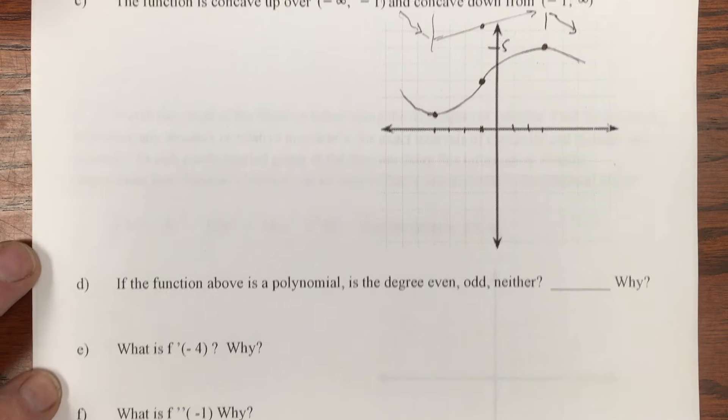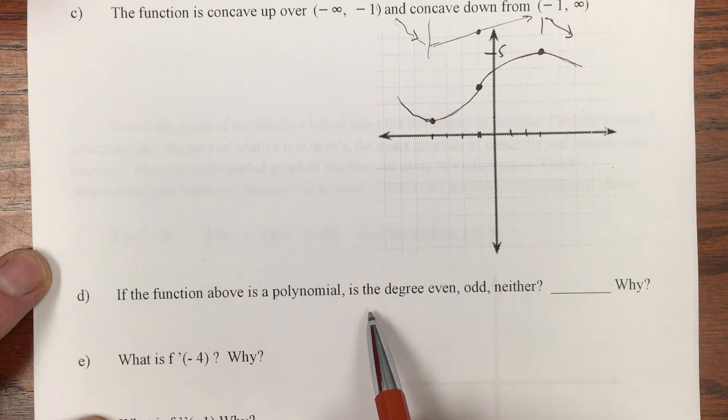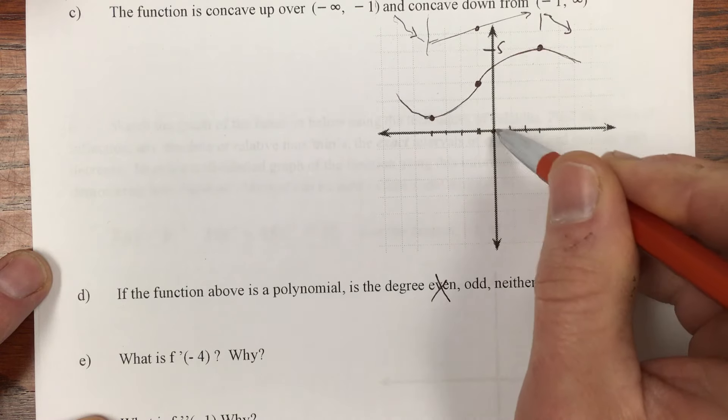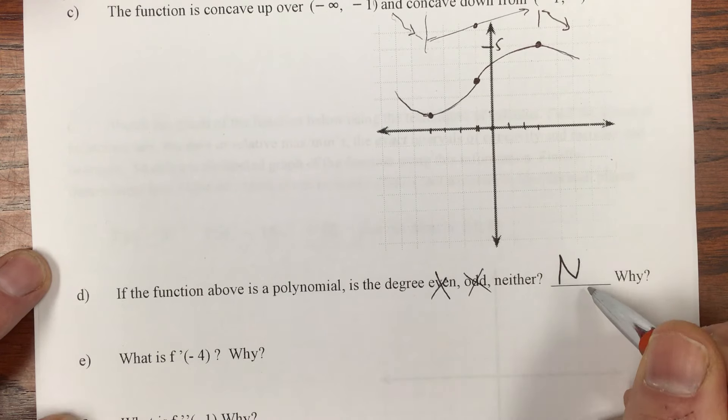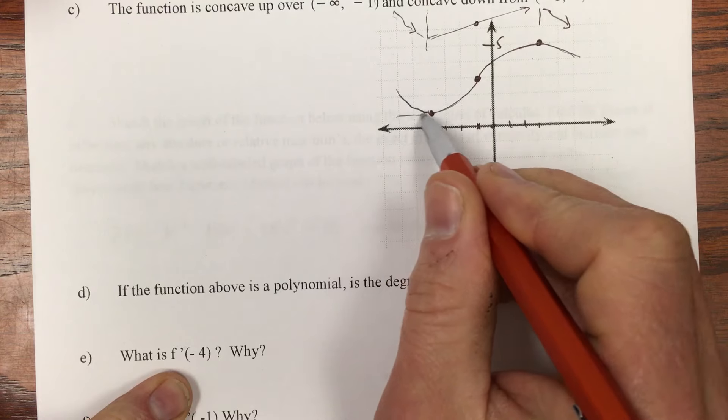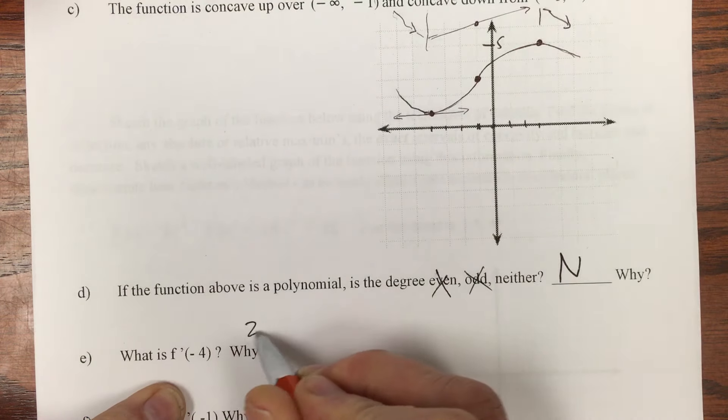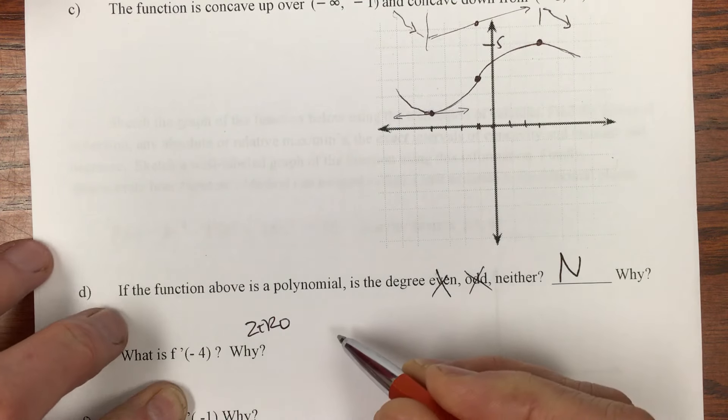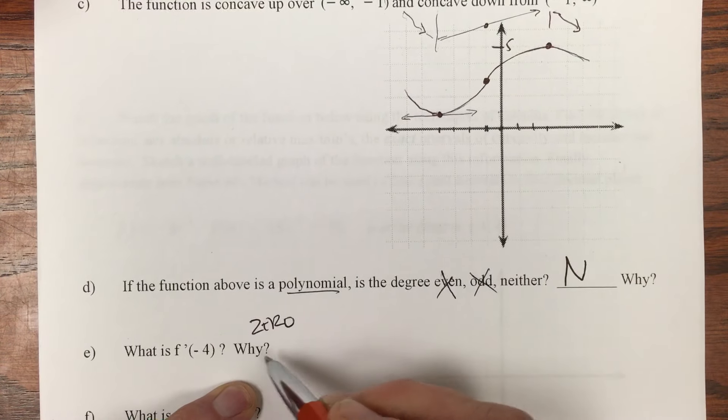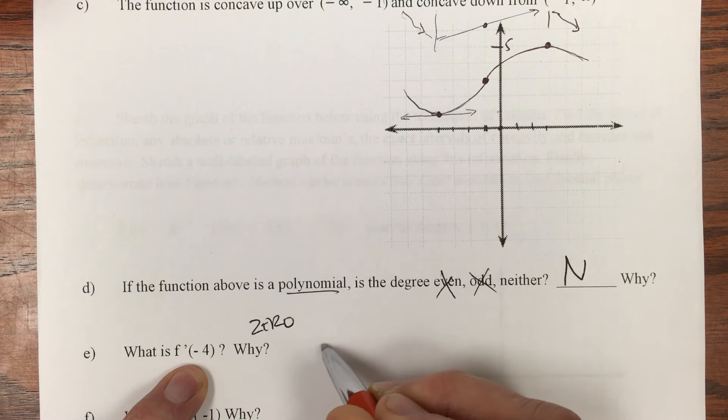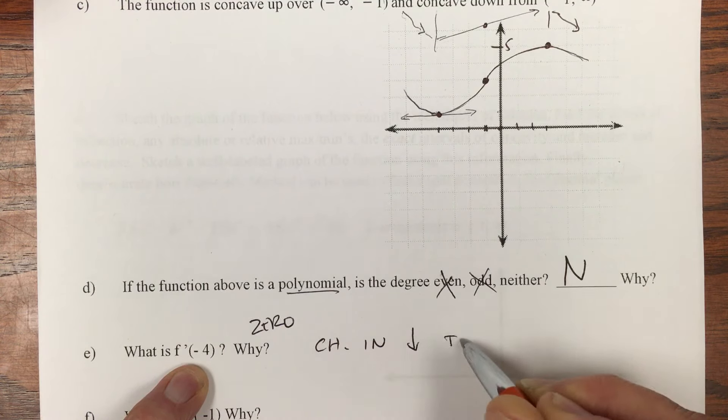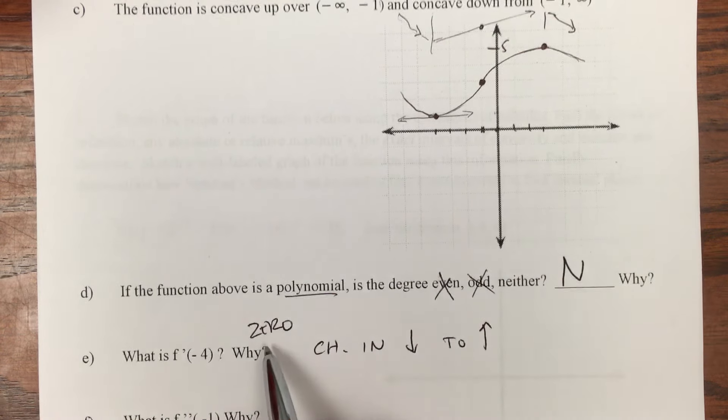If the function is a polynomial, is it even, odd, or neither? Well, it's not symmetrical about the y-axis, so it's not even. Odd needs to go through the origin, because that's where our thumbtack goes when we rotate it. So this is neither. What is f'(-4)? The derivative will tell me the slope there. That's zero. That is because it's a polynomial, and because it is a change from decreasing to increasing, it's going to be a local minimum there.